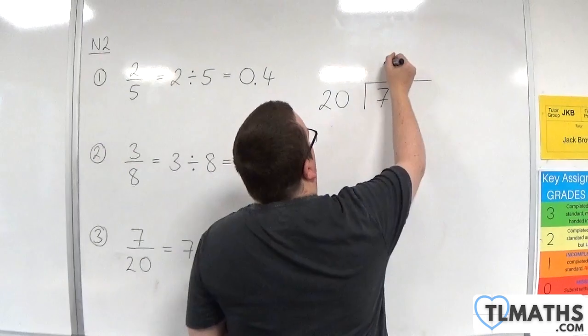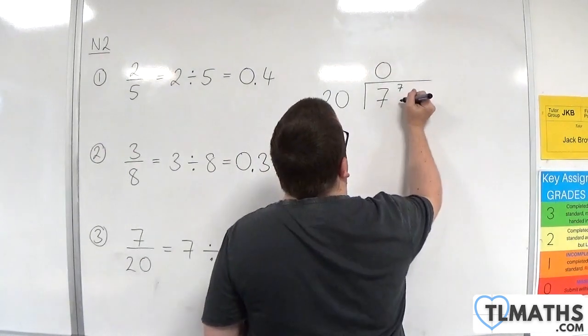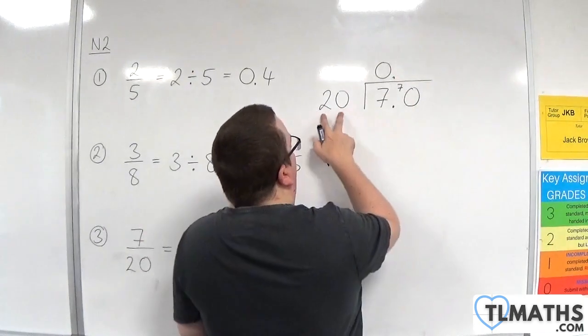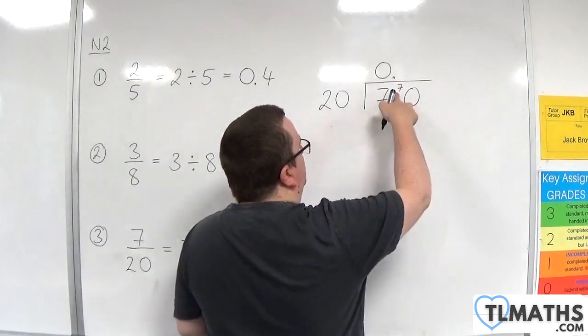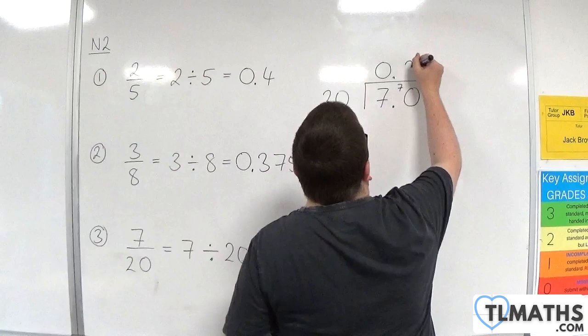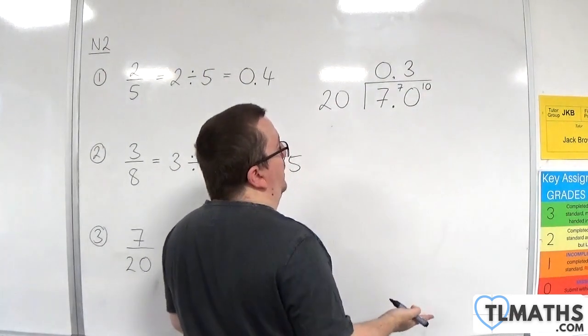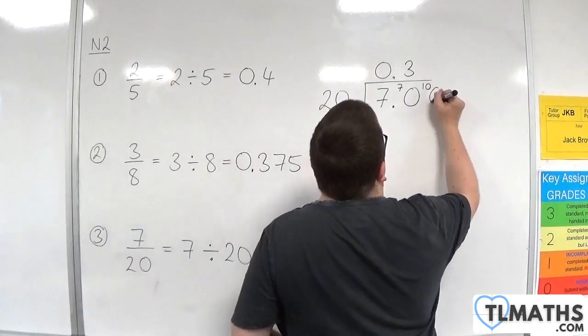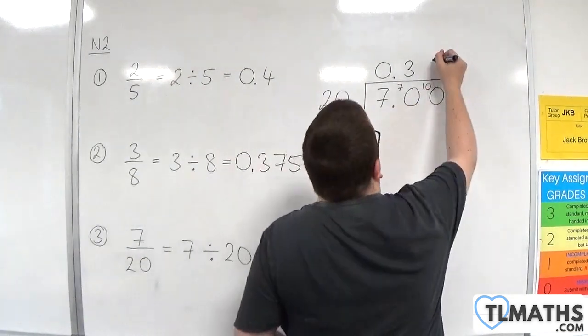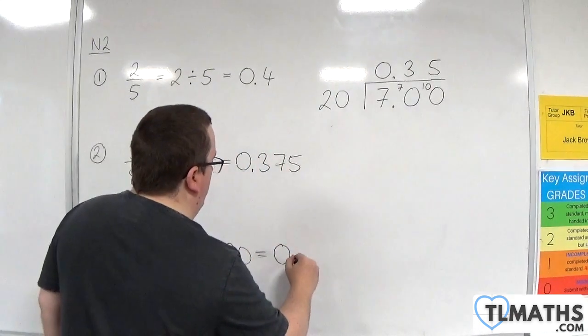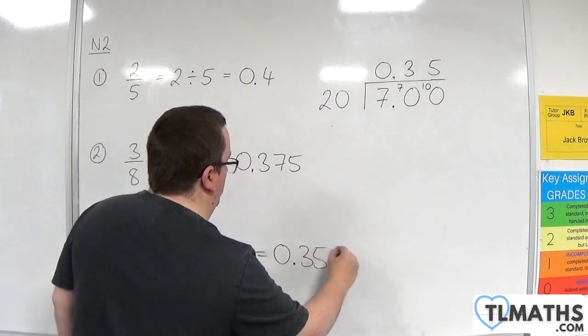Twenties into seven go zero, remainder seven. So we've got to bring in a zero and the decimal point. Twenties into 70 go three times with ten left over, because three twenties are 60. Bring in a zero. Twenties into 100 go five. So seven over 20 is the same as 0.35.